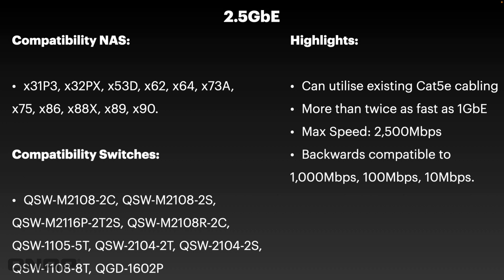2.5 gig is also completely backwards compatible with all the previous standards — gigabit (1000 megabits per second), 100 megabits per second, or 10 — so it's really useful for backwards compatibility. And because it's not much more expensive than gigabit hardware, it's also not much more power consumption either. When you get to the faster speeds like 25 gig, 40 gig, or 100 gig, the power consumption really goes up. But 2.5 gig has almost no penalty; it's a very low power usage chipset.